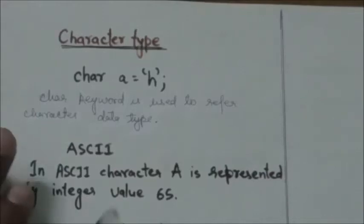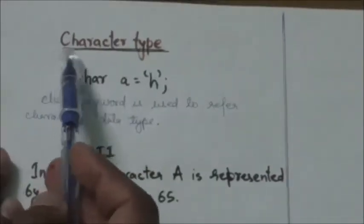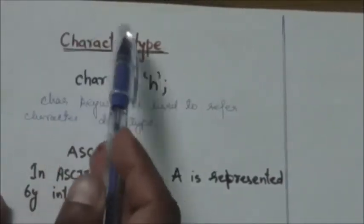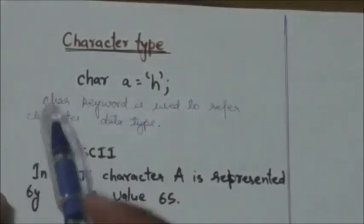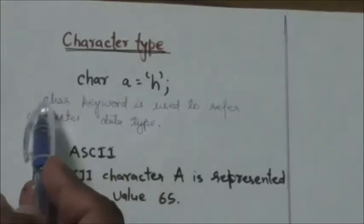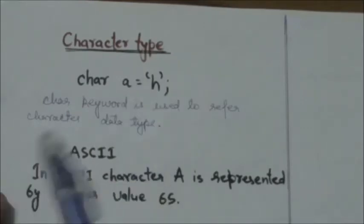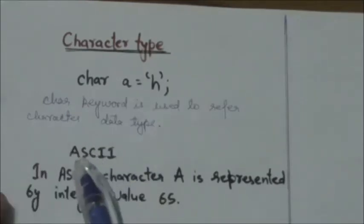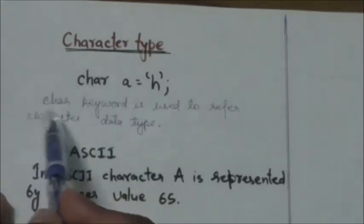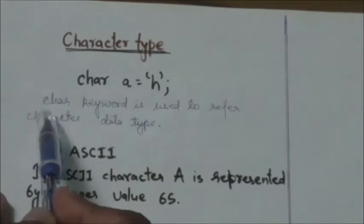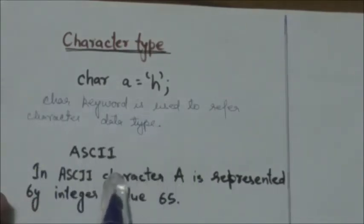Hello friends, welcome back. In this tutorial we will study about character type in C. In programming language C, the keyword char is used for declaring character type variables. This keyword char is used to refer to the character data type.